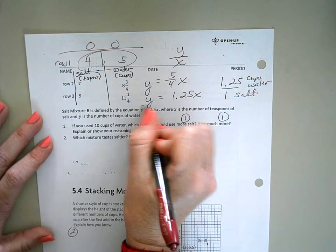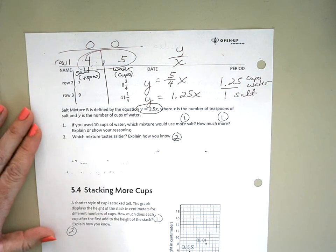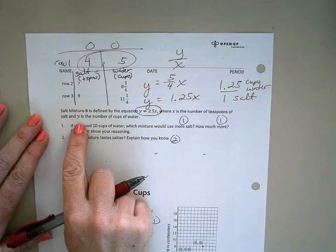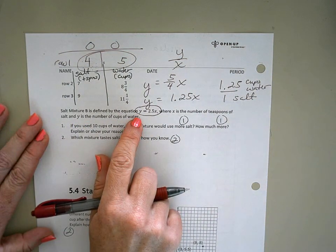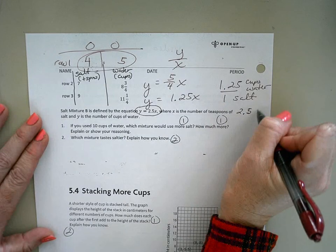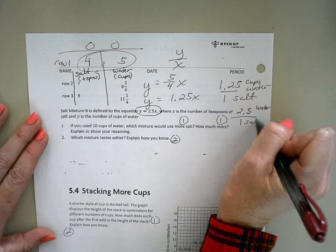Salt mixture B is this equation: Y equals 2.5X, where X, again, is your teaspoons of salt, and Y is your number of cups of water. So in mixture B, we're saying we're using two and a half cups of water for every one teaspoon of salt.